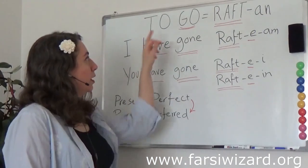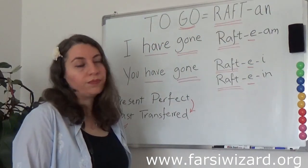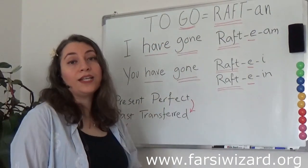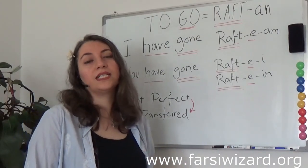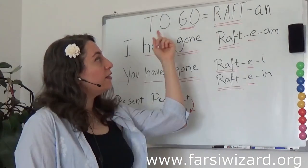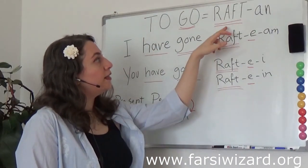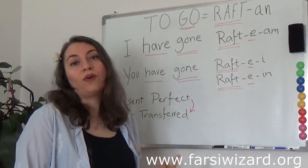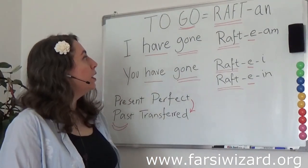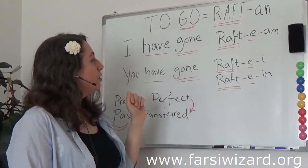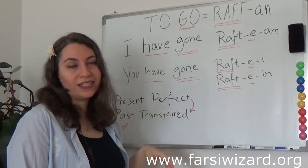So let's focus on a simple verb: to go — raftan. As you remember in the previous lesson, I explained that when you look at the infinitive, you will notice that the infinitive in Farsi will give you access to the past stem. Knowing that, today we're going to learn present perfect tense.